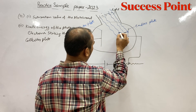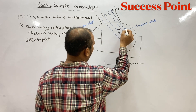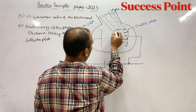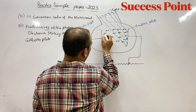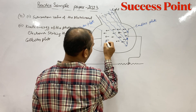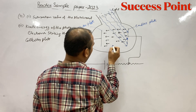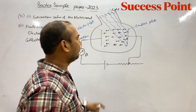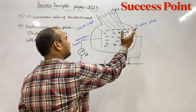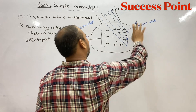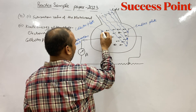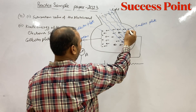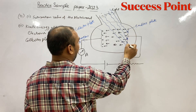जब किसी metal पे एक minimum frequency से ज़्यादा frequency की light incident होती है तो metal से photoelectrons निकलते हैं। जिस metal से photoelectrons निकलते हैं ऐसी metal को photosensitive metal कहते हैं। जिस plate से electrons निकलते हैं उसको emitter plate और दूसरी को collector plate बोलते हैं। Collector plate positive होती है और emitter plate negative होती है।